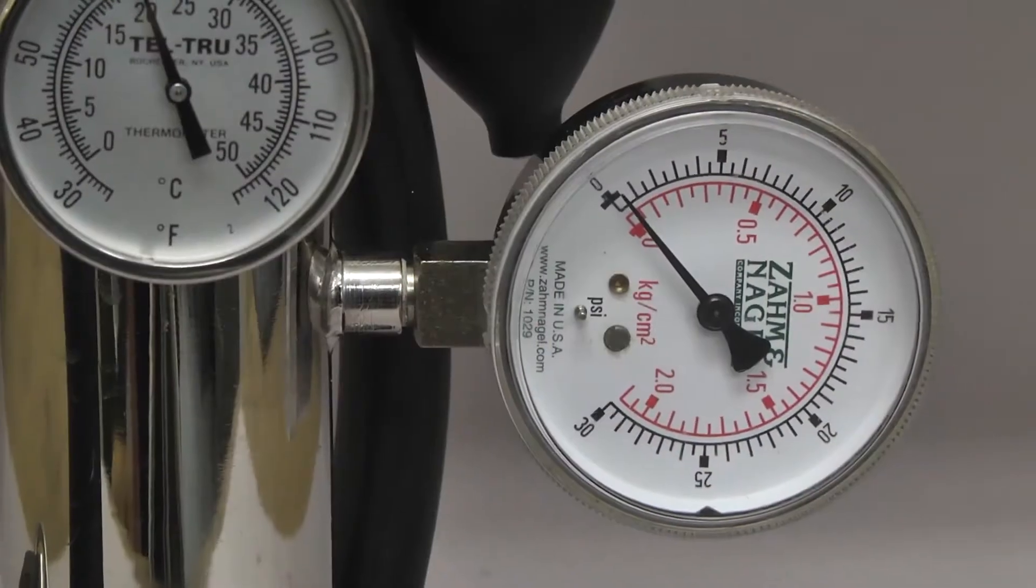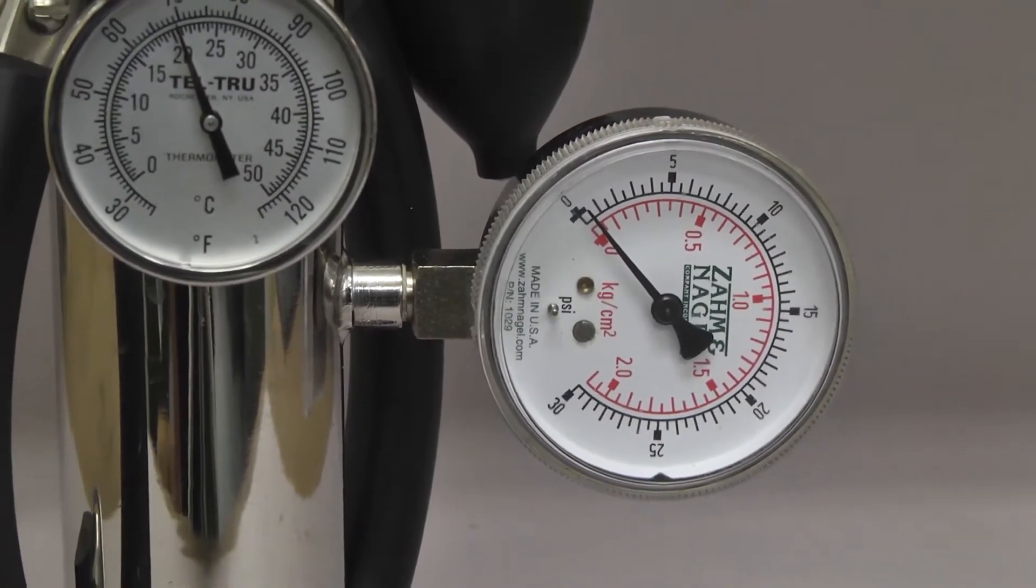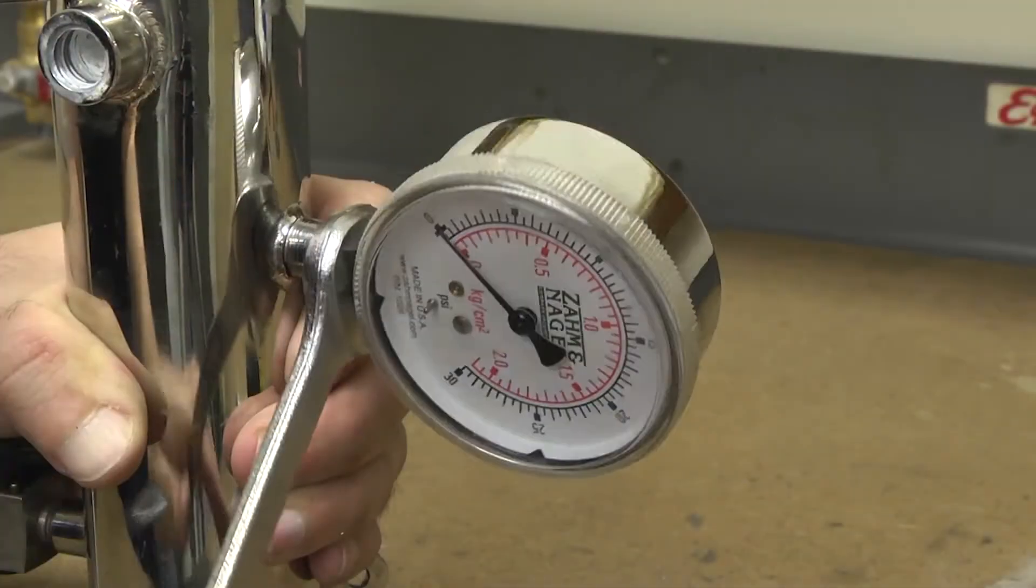To test and calibrate, remove the gauge from the instrument by unscrewing counterclockwise.